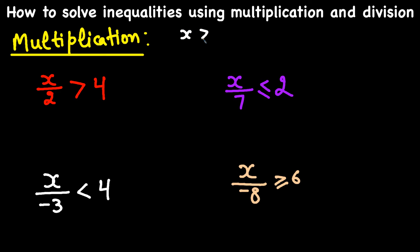Let's say we have the inequality X greater than Y. Multiplying each side of an inequality by a positive number produces an equivalent inequality. So if I multiply both sides by a positive A, then AX greater than AY is equivalent to X greater than Y — our inequality remains valid.